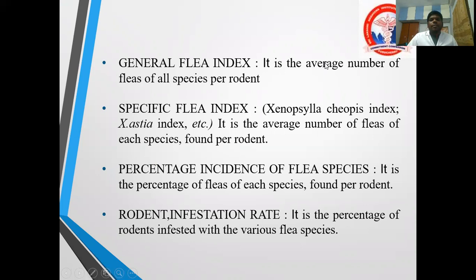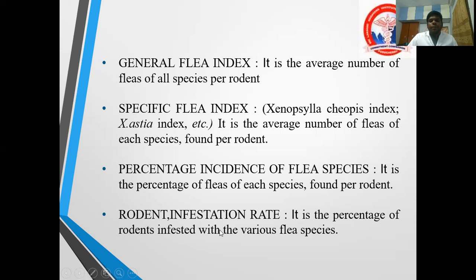Control measures include insecticides such as DDT dust, dieldrin spray, and malathion spray. Repellents like diethyltoluamide (DEET) are used, and rodent control measures must also be taken. Regarding flea index: the general flea index is the average number of fleas of all species per rodent. The specific flea index looks at a particular species — for example, Xenopsylla cheopis index. Percentage incidence of flea species is the percentage of each flea species found per rodent, and rodent infestation rate is the percentage of rodents infested with various flea species.